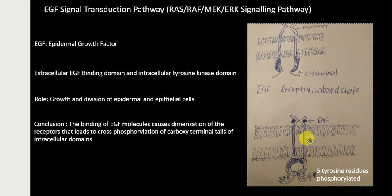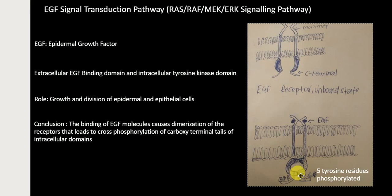After the conformational change occurs, the C-terminal region of the tyrosine kinase domain reaches the active site of the other monomer. Phosphorylation of this C-terminal tyrosine kinase domain occurs, and the same happens with the other C-terminus — it reaches the active site of the first monomer and phosphorylation occurs. This is called cross phosphorylation, because each C-terminal tail of the tyrosine kinase domain reaches the active site of the other monomer. In total, up to five tyrosine residues are phosphorylated.